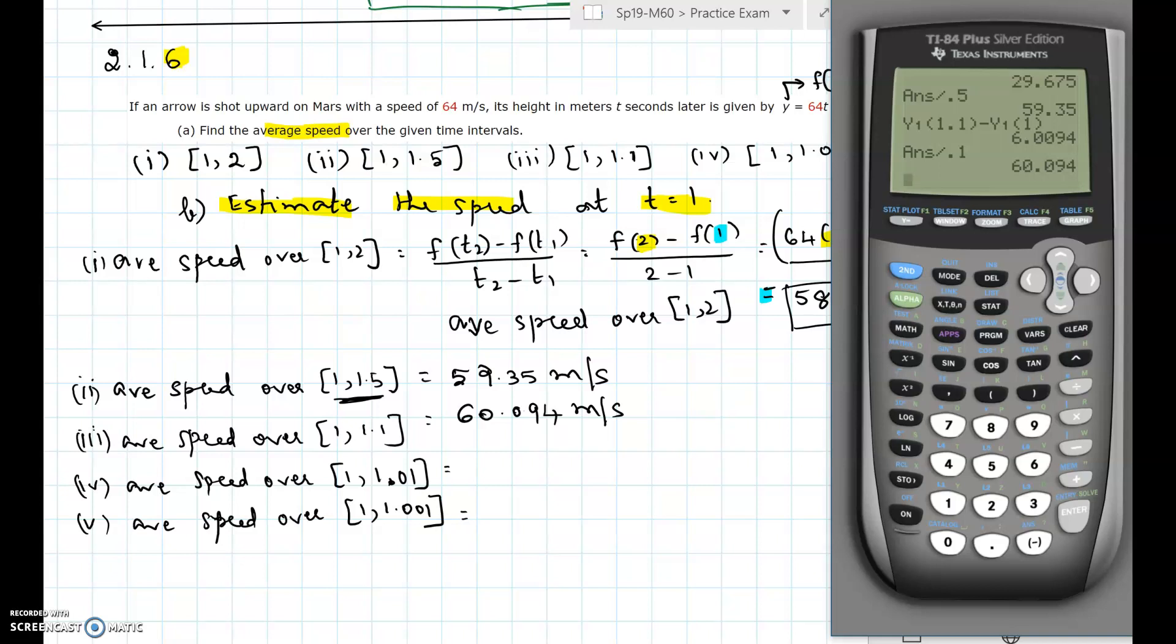Next we have to do the average speed over 1 and 1.01. VARS and then use the right arrow YVAR, then click on the function y1 evaluated at 1.01 minus y1 at 1, hit enter, then divided by the difference between 1.01 and 1, that will be 0.01. That will be 60.2614.